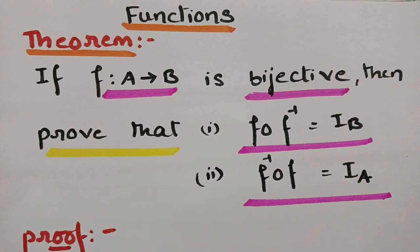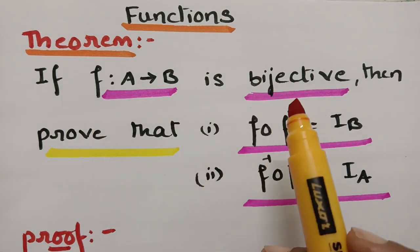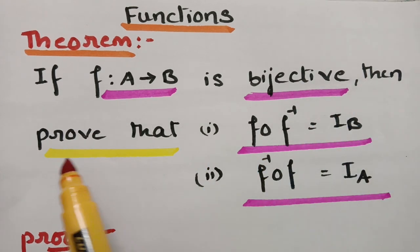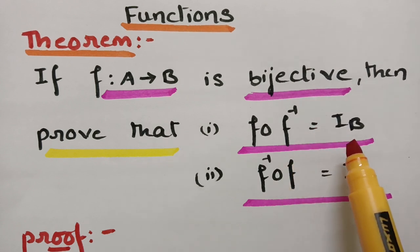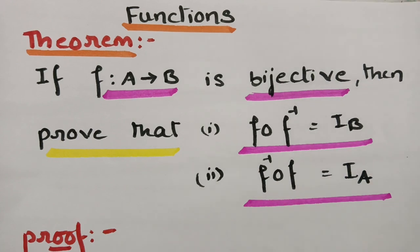Today's topic is on the theorem from functions, and this is related to MFCS, DMS and DMGD. This theorem is very, very important for your easy score. If f maps from A to B is a bijection, then prove that f circle f inverse is equal to IB, and f inverse circle f is equal to IA.